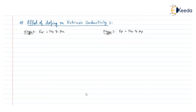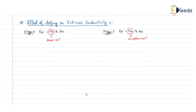In this topic we are going to discuss the effect of doping on the extrinsic semiconductor. From these equations we can see that the extrinsic semiconductor conductivity depends on the donor concentration, and similarly the extrinsic conductivity of the p-type material depends on the acceptor concentration. We can find how the extrinsic conductivity of an n-type and p-type material will change with respect to donor and acceptor concentration.